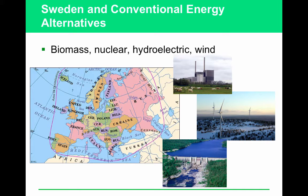Name one country that uses significantly less fossil fuels than others. Sweden — that's the central case in Chapter 20. They use biomass, nuclear, hydroelectric, and wind power. You can see all of that there in use.